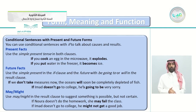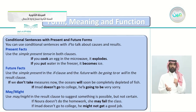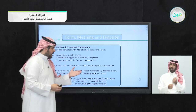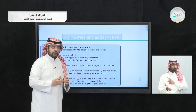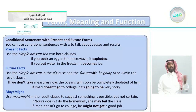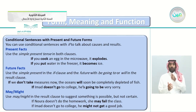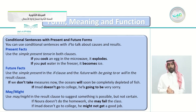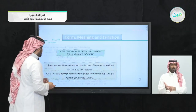We can also use 'may' or 'might' in the result clause to suggest something is possible but not certain. If you are certain, use 'will.' If you are not certain, use 'may' or 'might.' For example: 'If Noora doesn't do her homework, she may fail the class' — we are not certain she will fail. 'If Imad doesn't go to college, he might not get a good job.' Use 'may' or 'might' when the result is uncertain.